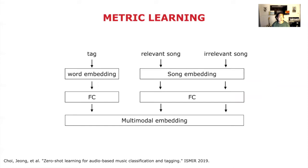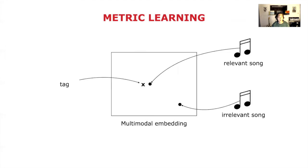To overcome this fixed vocabulary issue, a previous work in 2019 proposed using pre-trained word embeddings as side information for metric learning. Metric learning is already prevalent in many domains. Briefly, a given tag is mapped to a shared embedding space through a tag embedding model, and songs are mapped to the shared embedding space through a song embedding model. In the shared embedding space, we want the distance between a tag and a relevant song to be closer than the distance between the tag and an irrelevant song. The model is optimized by iterating this triplet sampling.